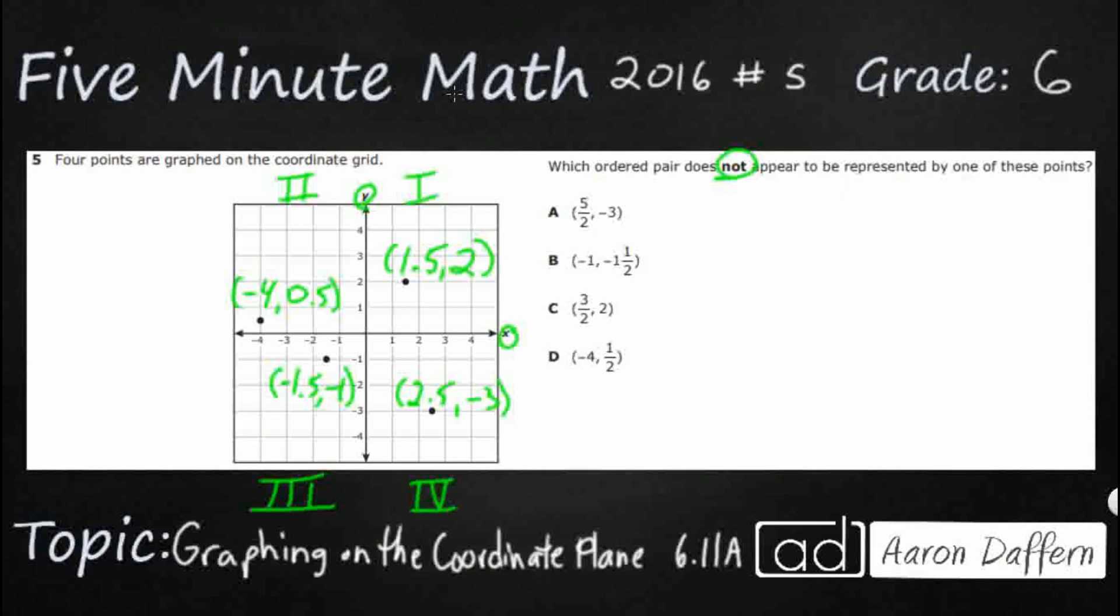Now when we look over here at A, B, C, or D, I naturally went to decimals, but take a look. We've got some improper fractions. We've got some mixed numbers. So let's go ahead and rewrite all of these as decimals since that's what I went ahead and did.